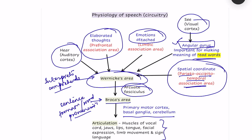Or maybe hand gestures are used. We need proper coordination, proper initiation and stoppage of movement, which is brought about by the basal ganglia. There is also Exner's area, located in the pre-motor cortex, which is important for expression of written words — for writing speech. The information from Exner's area then goes to the motor cortex for expression.